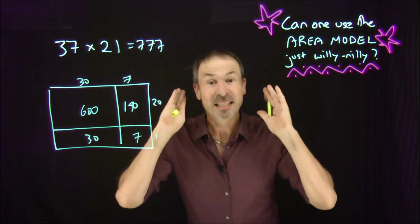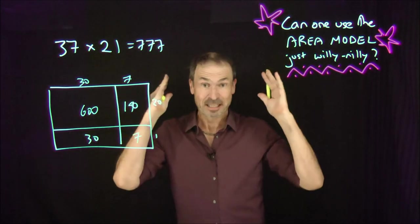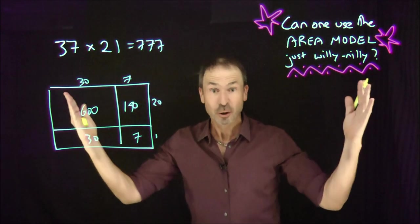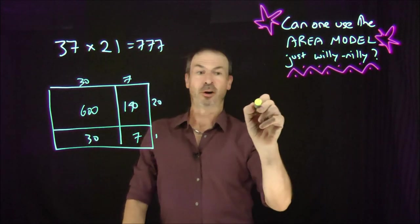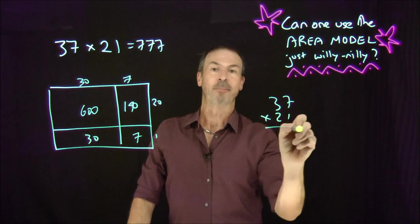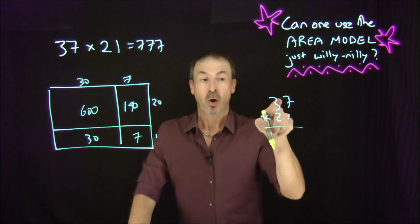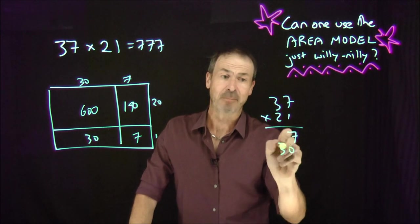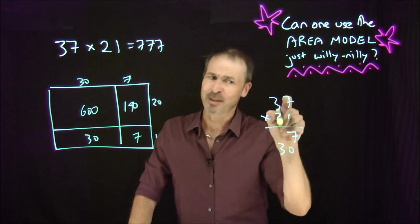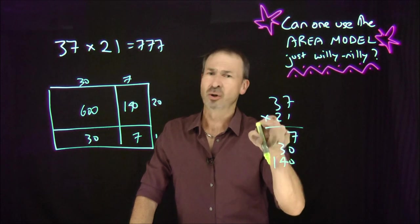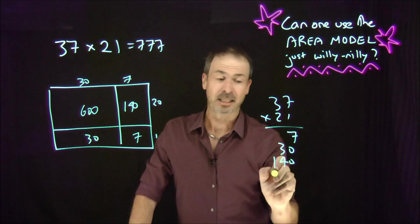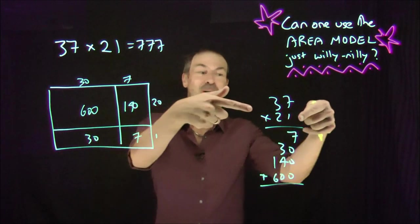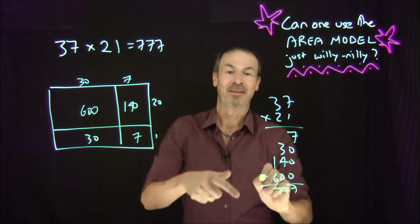In fact, that's how we can even teach the standard algorithm. If we still need to teach the standard algorithm on pencil and paper, great — we can do it this way as well. Here's the standard algorithm for 37 times 21: 1 times 7 is literally 7, 1 times 30 is really 30, 20 times 7 is 140, and 20 times 30 is 600. All I need to do is add up those pieces — exactly the pieces from the area model. Add them up: 777.